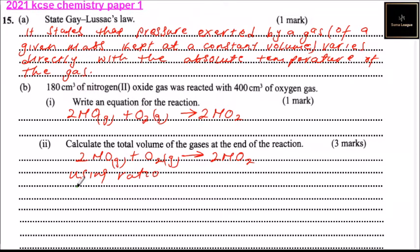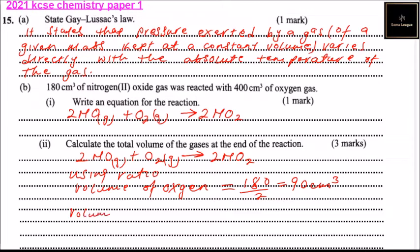The volume of oxygen that reacted equals 180 divided by 2, which is 90 cm³. The volume of oxygen that did not react equals 400 minus 90, which gives 310 cm³.